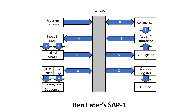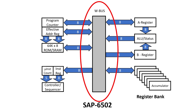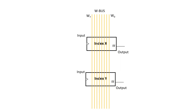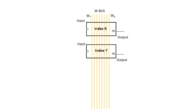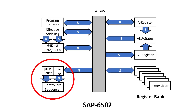This is a block diagram of the SAP1, which originally came from Albert Paul Malvino but Ben added a couple of extra instructions. This is the machine we're building, and in the first part we concentrate on the W-Bus and the register bank, which are actually built in an integrated manner. In this design the W-Bus actually forms underneath all of these register chips. In the last video we moved on to the sequencer controller and we're going to spend a bit more time on it in this video.